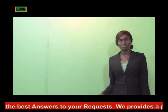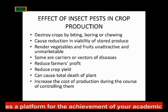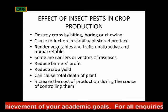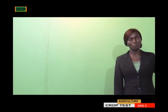They also render vegetables and fruits unattractive and unmarketable. Some of these insect pests are carriers or vectors of disease, e.g., aphids. Then they reduce the profit of the farmer, they reduce the yield of the crop, they sometimes cause a total death of the plants, and they increase the cost of production — because by the time you are trying to prevent or control them, you are incurring more expenses.